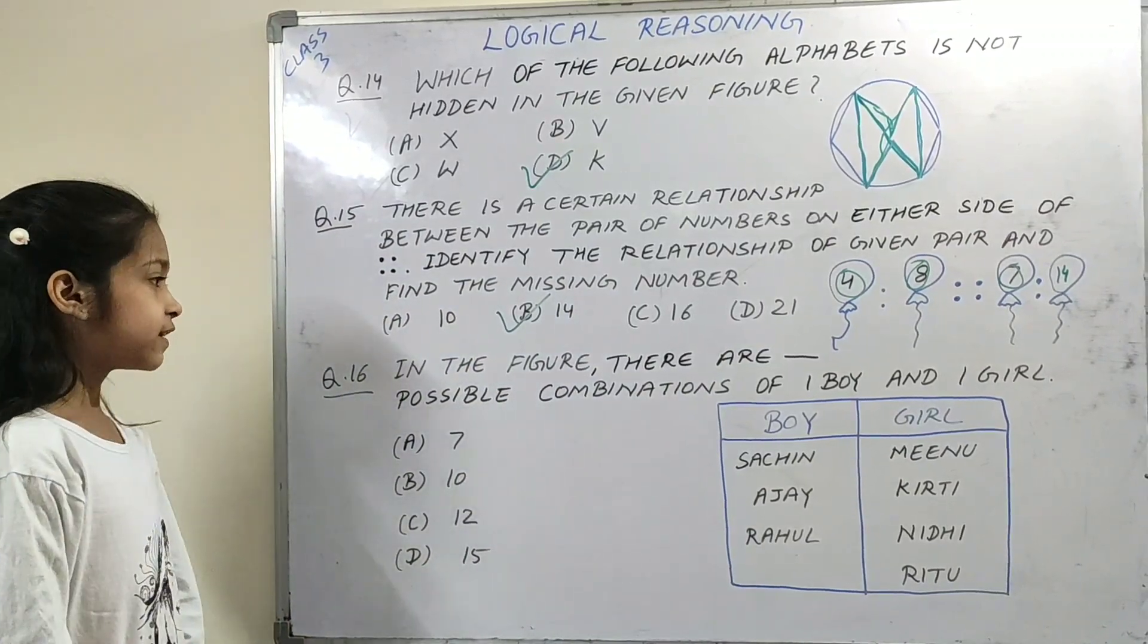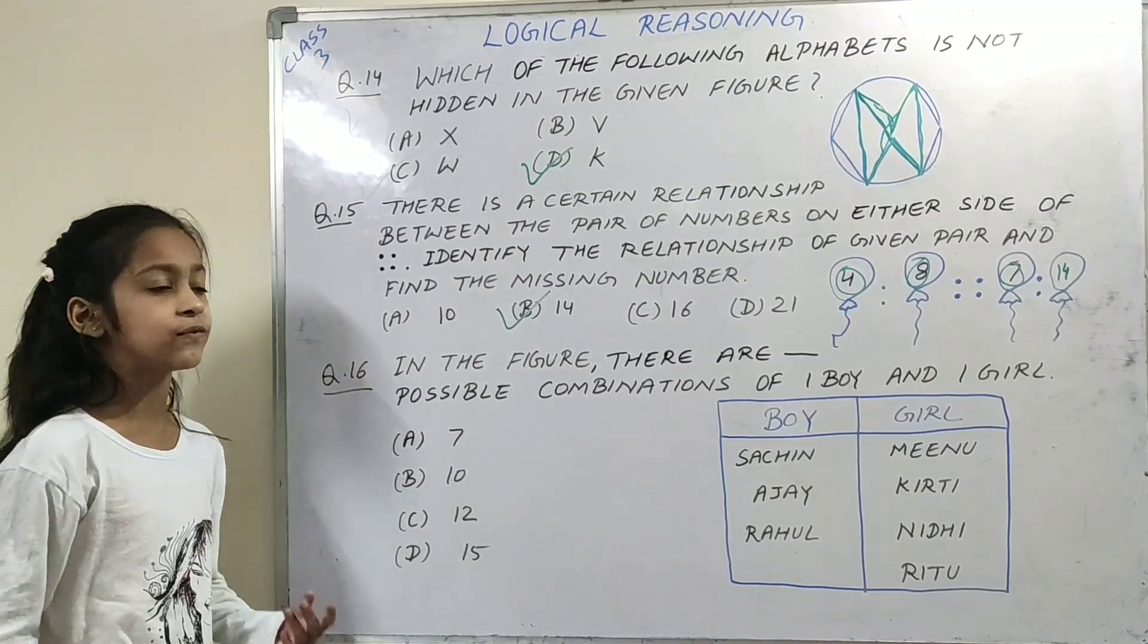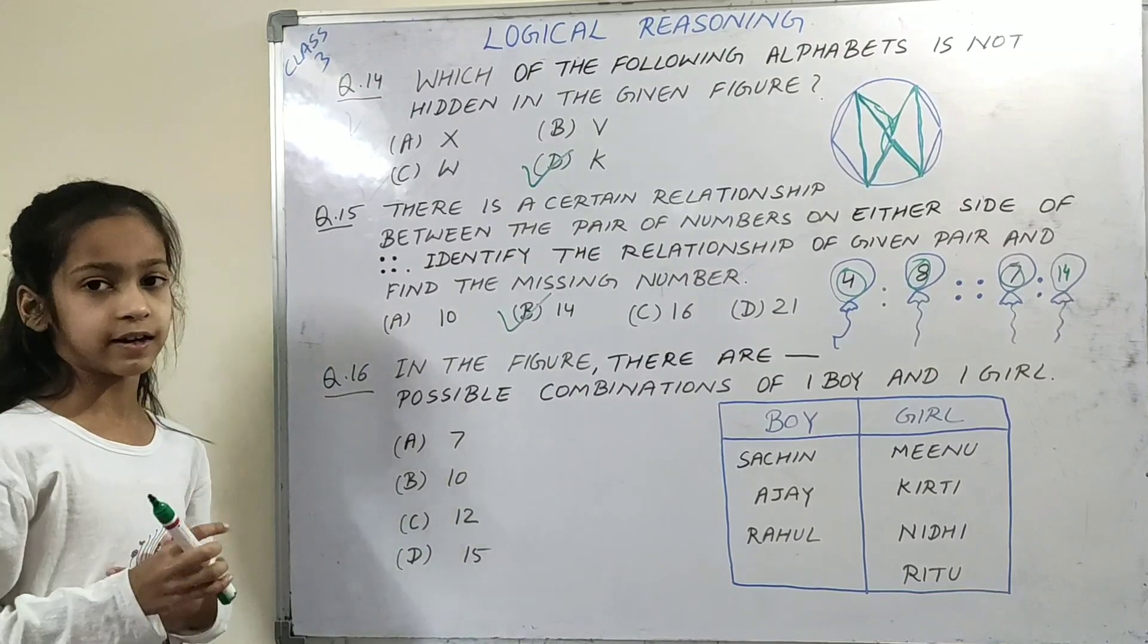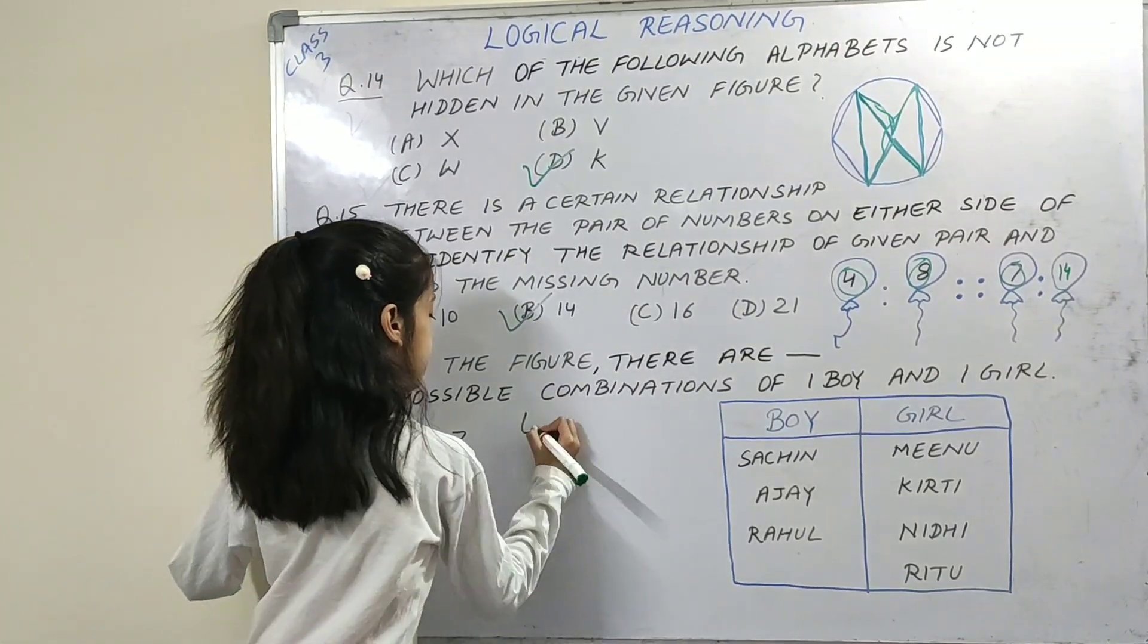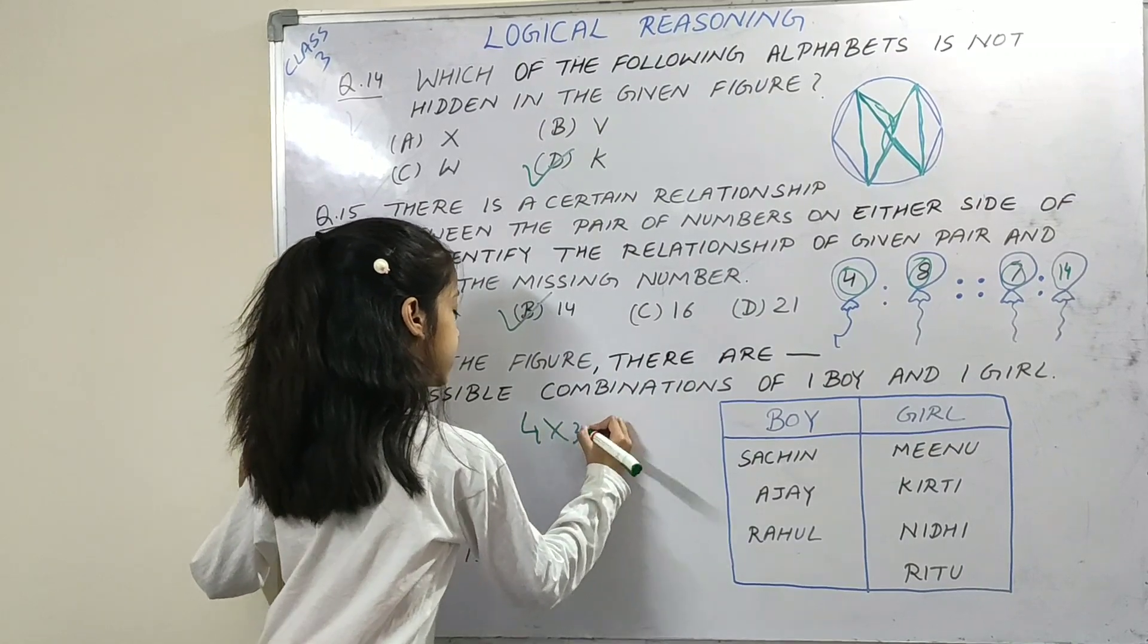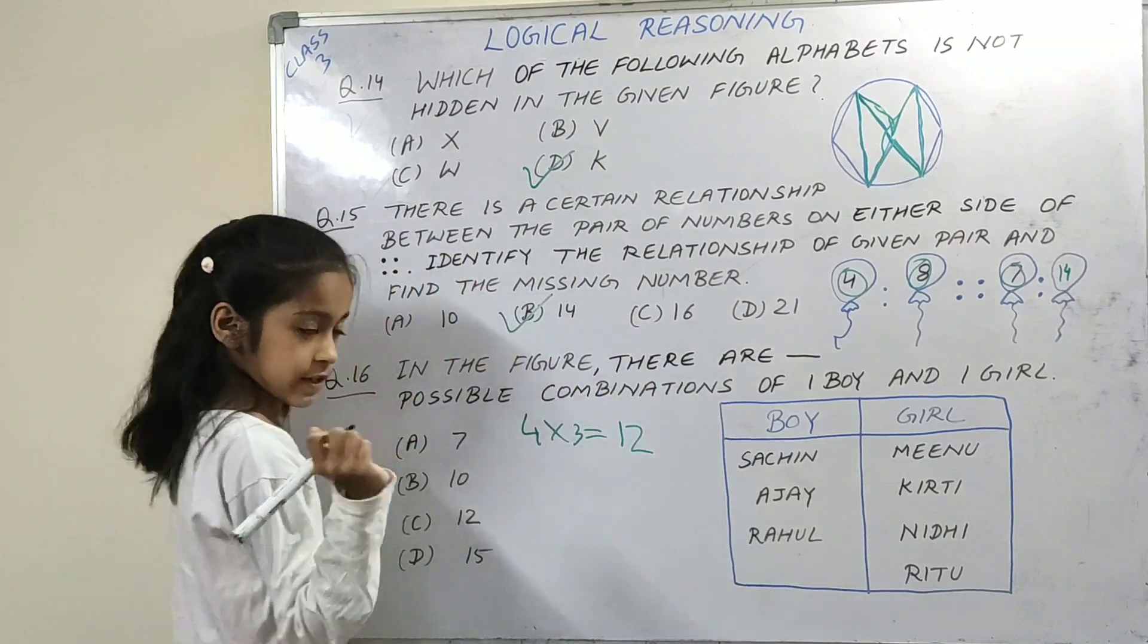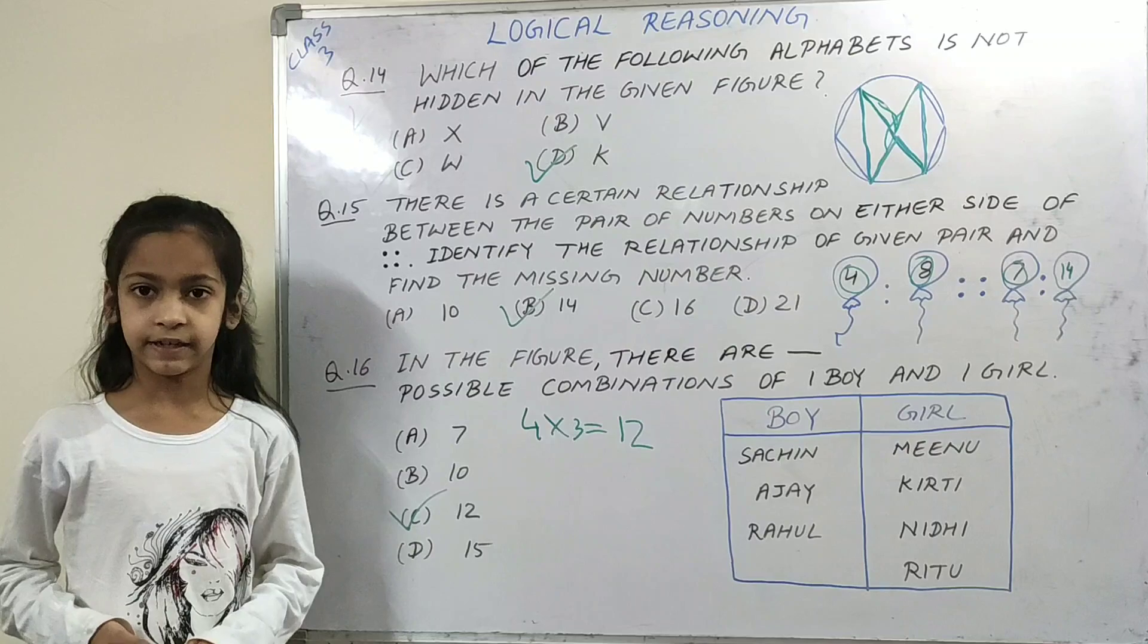Next question. In the figure, there are dash possible combinations of one boy and one girl. The method is that we need to multiply it in this type of question. So we will do 4 multiplied by 3, which is 12. This is option B, 12. This is a short way to do it.